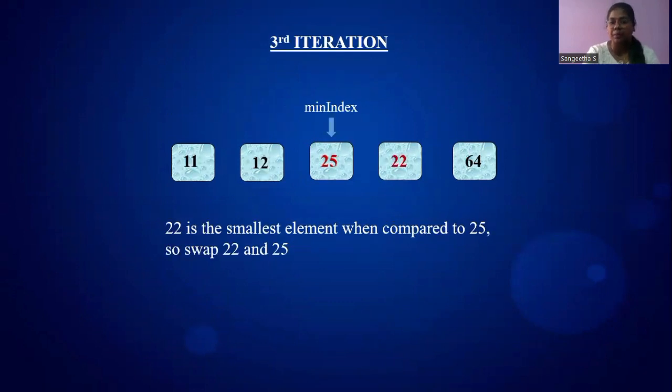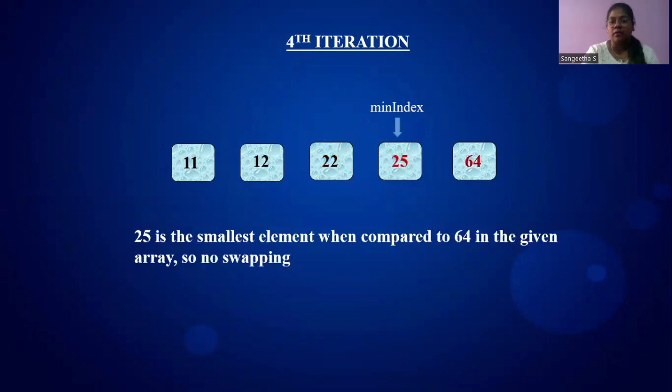Now the minIndex goes to position 2 where i becomes 2 and j becomes 3. At index 2 the value is 25, and at index 3 the value is 22. We compare 25 with 22 and 64. 22 is less than 25, so we swap 25 and 22. Now minIndex is at position 3 where i equals 3 and j equals 4. Compare 25 and 64. 25 is less than 64, so no swapping.